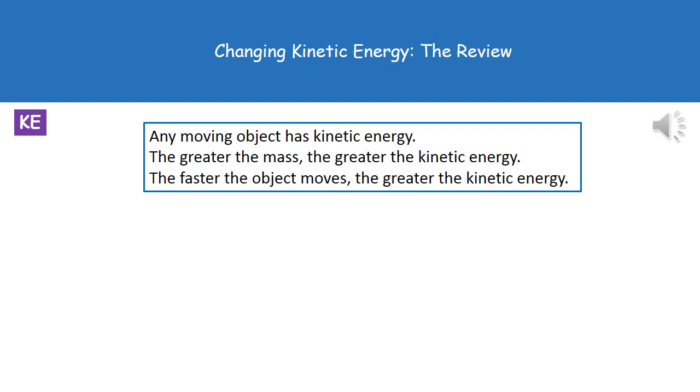Now we've got two factors that are going to affect how much kinetic energy this object has. The first one is its mass, and the greater the mass, the greater the kinetic energy. The second one is its speed, and the faster that object moves, the greater the kinetic energy.